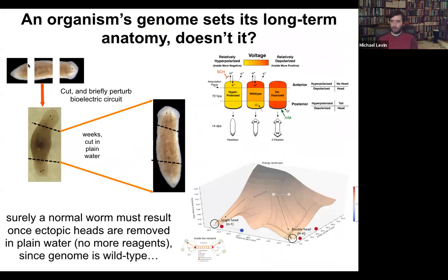Here's our normal planarian. We've cut off the head and the tail, got the middle fragment, perturbed the electric circuit according to our model, and here's your two-headed animal. We ask a simple question: we give it a couple of weeks to get everything settled down, cut off the primary head, cut off this ectopic secondary head. Some people think that we've somehow epigenetically reprogrammed this posterior tissue, so we'll cut it off and throw it away. All that remains is a normal middle fragment that didn't have any head tissue in it.